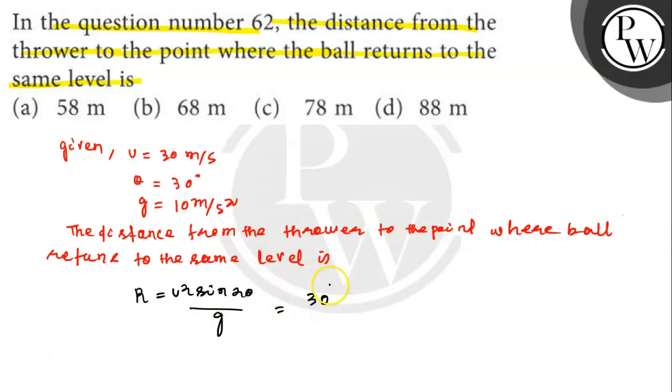U value is 30. U square sin 2 theta: sin 2 into 30 divided by 10. So, 30 into 30, 2 into 30, into sine 60 divided by 10.